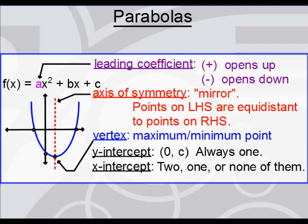Last but not least, the x-intercepts. The x-intercepts, you can have two of them, as we can see here. It is possible to have just one, and in that case the vertex would be on the x-axis tangent to it, and it is possible to have none at all.